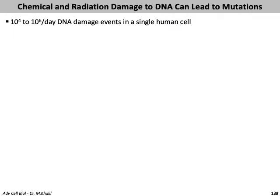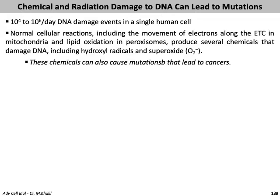Chemical and radiation damage to DNA can also lead to mutations. There are about 10,000 to a million DNA damage events per day in a single human cell. Normal cellular reactions — including electron transport in mitochondria and lipid oxidation in peroxisomes — produce chemicals that damage DNA, including hydroxyl radicals and superoxide, which can cause mutations leading to cancer.